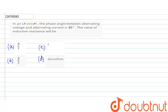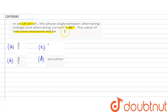We will ask the question. The question is: the phase angle between the alternative voltage and alternative current is 45 degrees. We will ask about the inductive reactance. We will start the question.